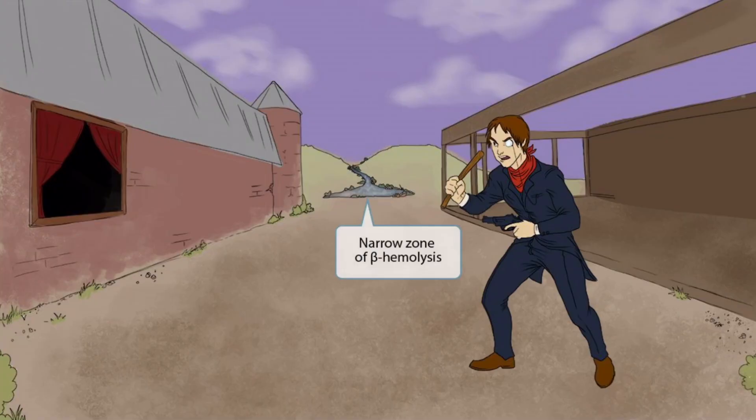Now let's discuss the river in the background. For most of our videos, we'll use a bay to represent beta-hemolysis because these sound so similar. However, Listeria is unique because it exhibits a very narrow zone of beta-hemolysis when grown on blood agar. Therefore, we've shown a narrow river coming down between two hills and then collecting into this little mini bay area. So narrow river or bay for narrow zone of beta-hemolysis.